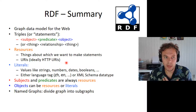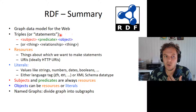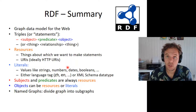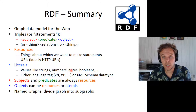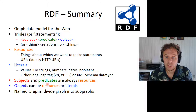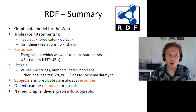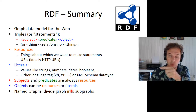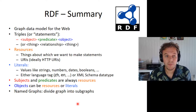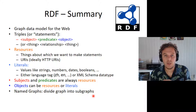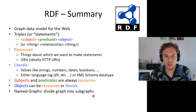What I didn't mention before is that specifically for the object position, you can also have values — strings, numbers, and things like that. Subjects and predicates are always resources, but objects can be either resources when you point at another thing, or literals when you point at a value. We also didn't talk about named graphs, which is when you have multiple triples together.